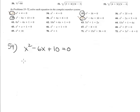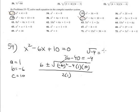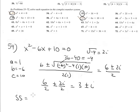Again, quadratic equation in the complex number field. a = 1, b = -6, c = 10. Minus b is 6, plus or minus square root of (-6)² minus 4 times 1 times 10, divided by 2. This is 36 minus 40 equals negative 4, and square root of negative 4 is 2i. So we have (6 ± 2i) / 2 = 3 ± i. The solution set is {3 + i, 3 - i}.